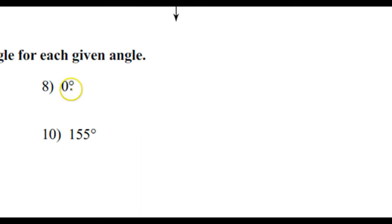So if I take 0 and do plus or minus 360, of course, 0 plus 360 is just 360 degrees. 0 minus 360 is negative 360 degrees.